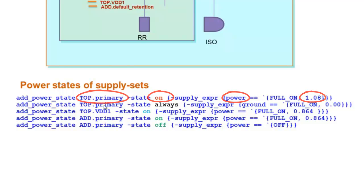Top.VDD1 Power has a state named On operating at 0.864V. Add.Primary Power has a state named On operating at 0.864V. It also has a state named Off which indicates it is switched off.